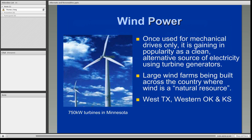Wind power was once used for mechanical drives only, and it's gaining in popularity as a clean alternative source of electricity using turbine generators. Large wind farms are being built everywhere across the country where wind is considered to be a natural resource. Massive wind farms can be found in places such as West Texas, the Texas Panhandle, western Oklahoma, and throughout Kansas. However, most of the wind farms started in California, and most people have seen one of these in their travels. Wind farms will continue to increase in terms of overall locations as well as the number of windmills in these farms.